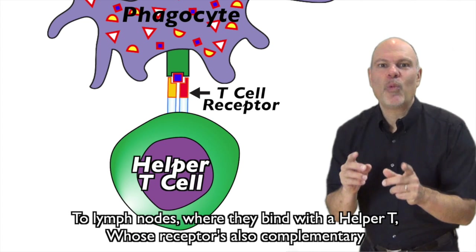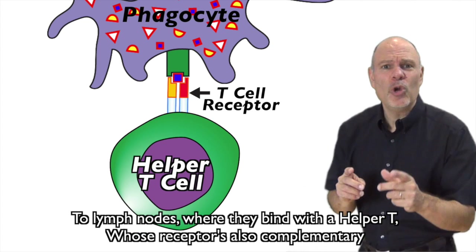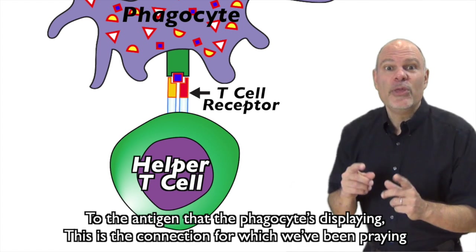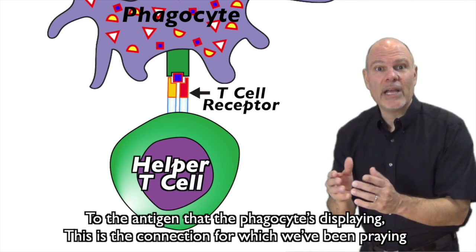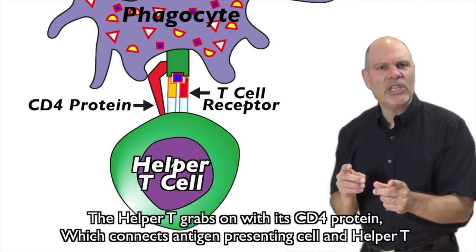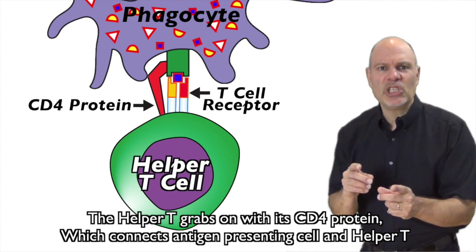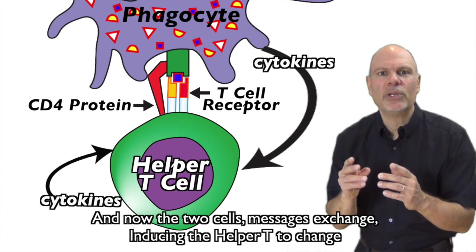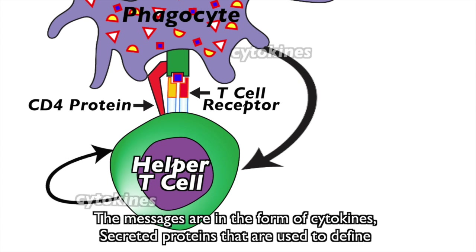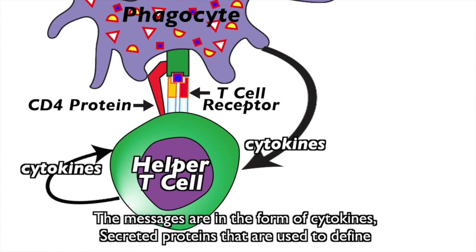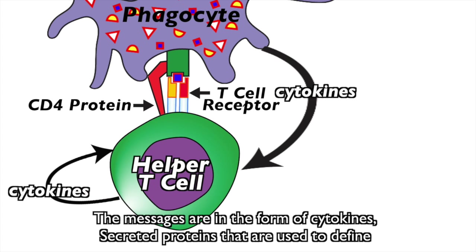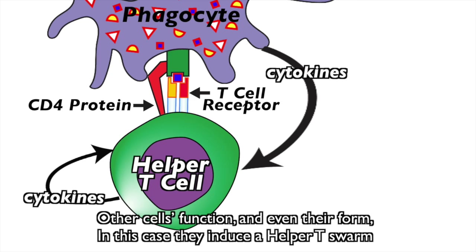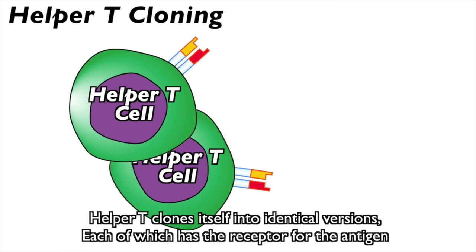Phagocytes travel to lymph nodes where they bind with a helper T whose receptors are complementary to the antigen the phagocyte is displaying. The helper T grabs on with its CD4 protein, which connects the antigen-presenting cell and helper T. Now the two cells' messages exchange, inducing the helper T to change. The messages are in the form of cytokines — secreted proteins used to define other cells' function and even their form. In this case they induce a helper T swarm.